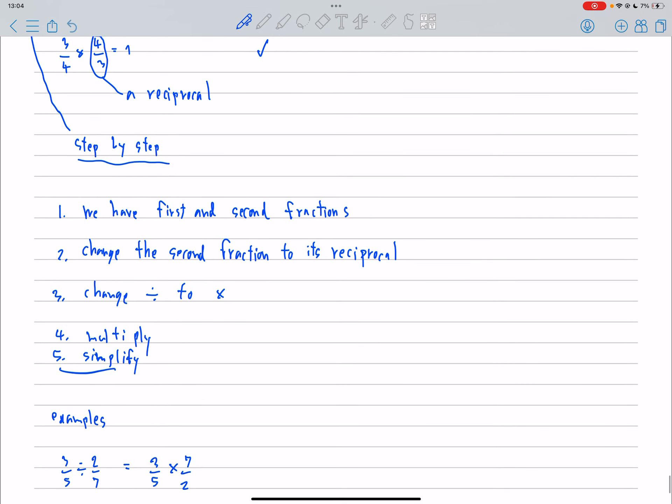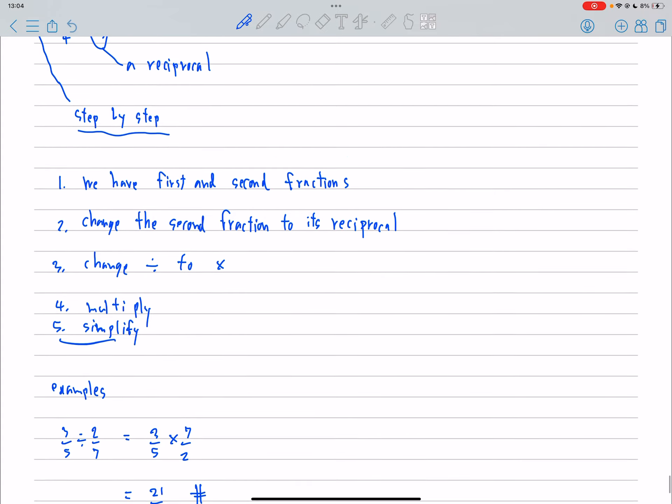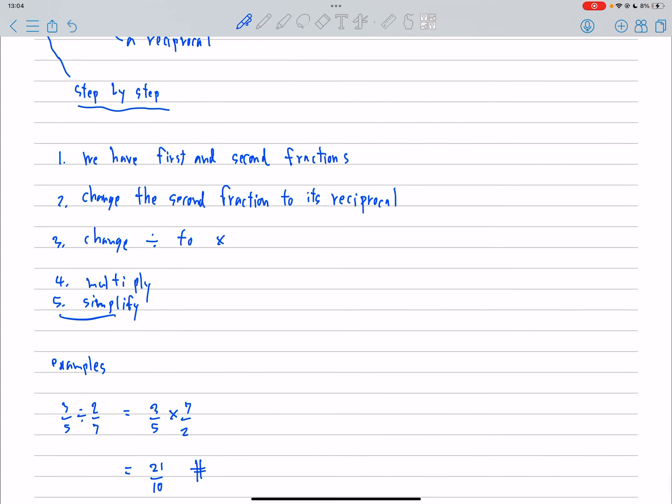So for example, T over 5 divided by 2 over 7. So the reciprocal of 2 over 7 is 7 over 2. So the answer is 21 over 10.